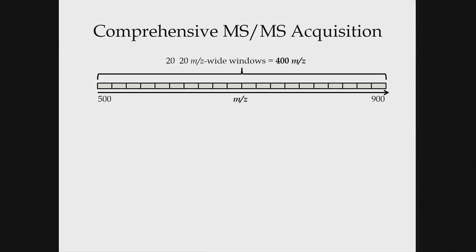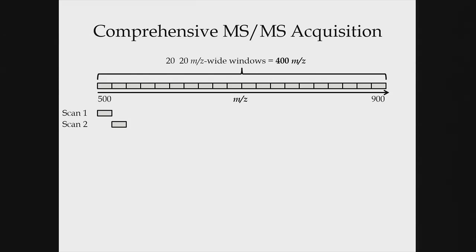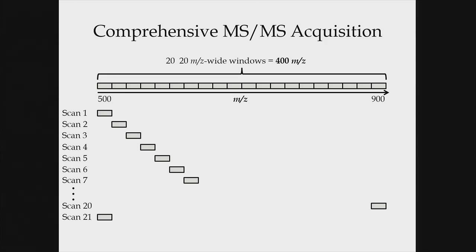When I talk about comprehensive MS/MS acquisition, we're acquiring a cycle of MS/MS scans. The reason this is called data independent is because we're not basing our MS/MS scans on decisions from MS1. In DDA, we look in MS1 and say, 'Do I see a signal? Then I'll do an MS/MS for that precursor.' With DIA, we acquire a repeated cycle of MS/MS completely independent of any MS1 information. Our first scan is a wide isolation window MS2 — say 20 m/z wide — and the next scan is adjacent, covering 520–540 m/z. By scan 20, we've comprehensively covered the 500 to 900 m/z range.